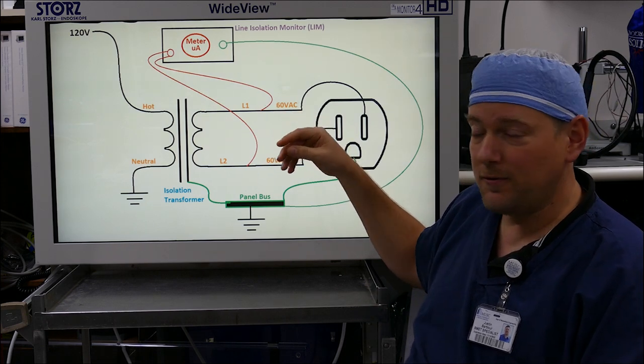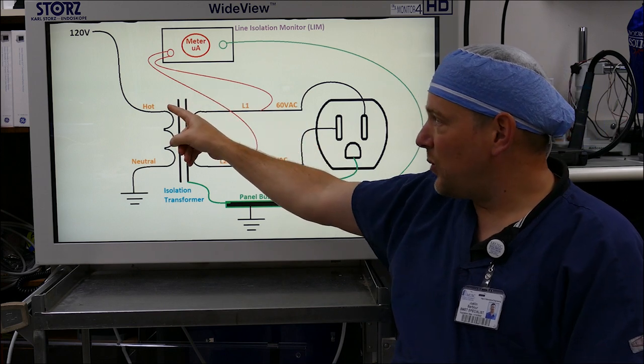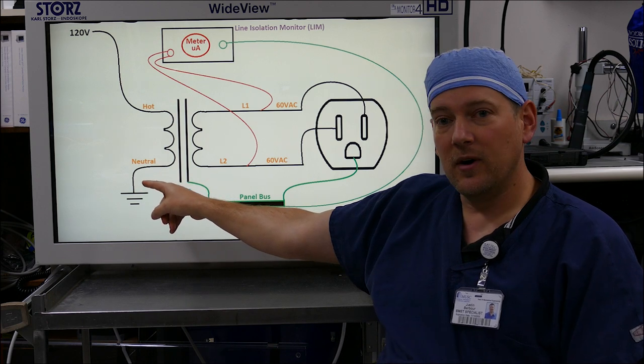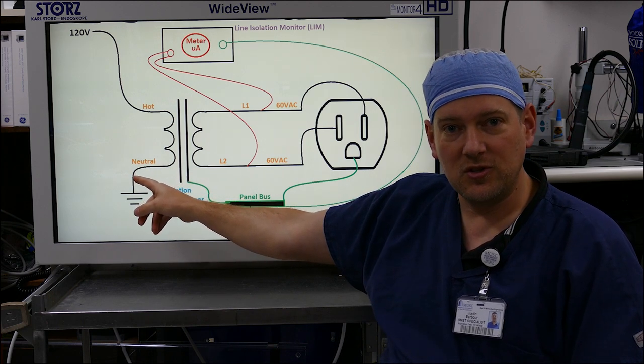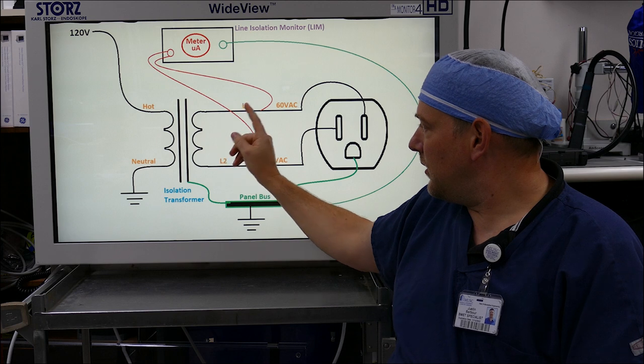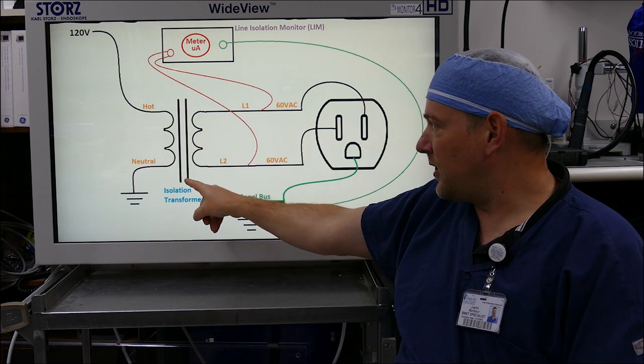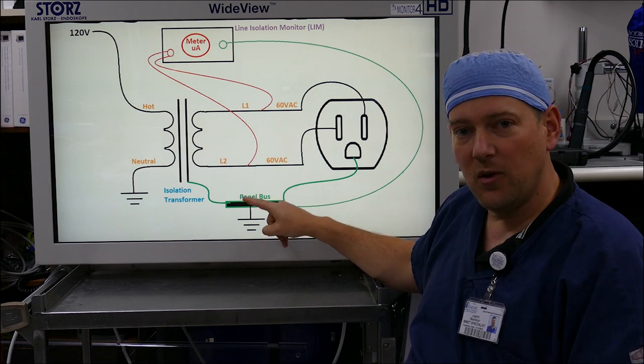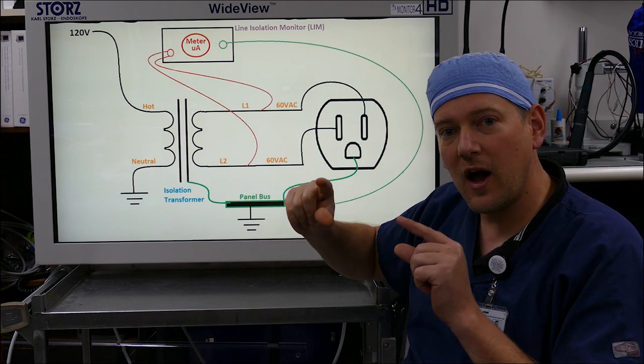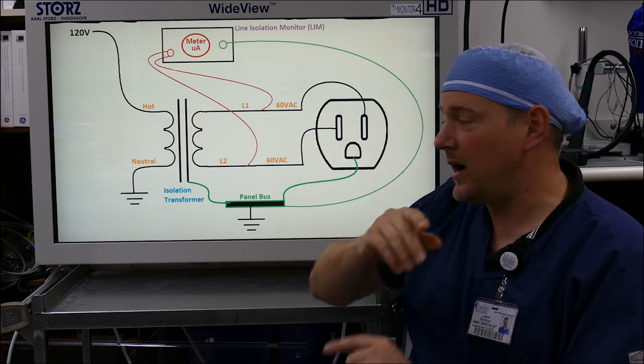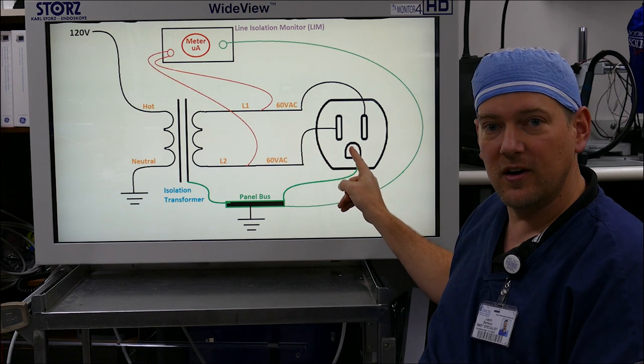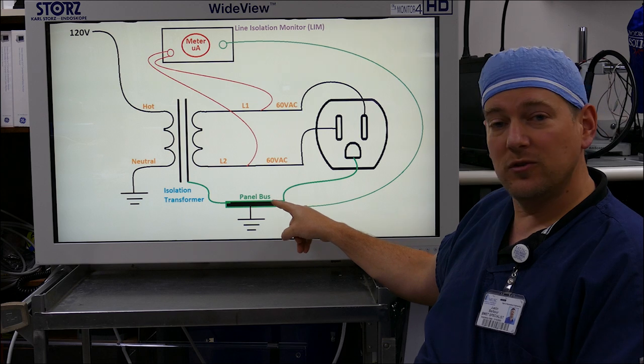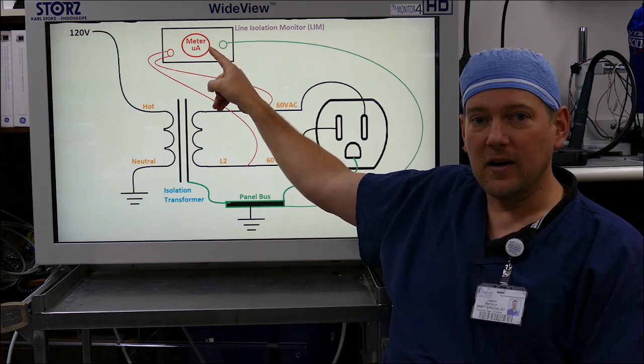So let's walk through the flow. 120 volts comes into the primaries of the transformer. The other side of the transformer is at neutral potential. You have a ground that goes from the chassis of the transformer over to the panel bus. It will be a long copper strip of all your grounds to all the electrical outlets that are in your operating room. You'll also have one wire that goes from that panel bus all the way up to a meter.